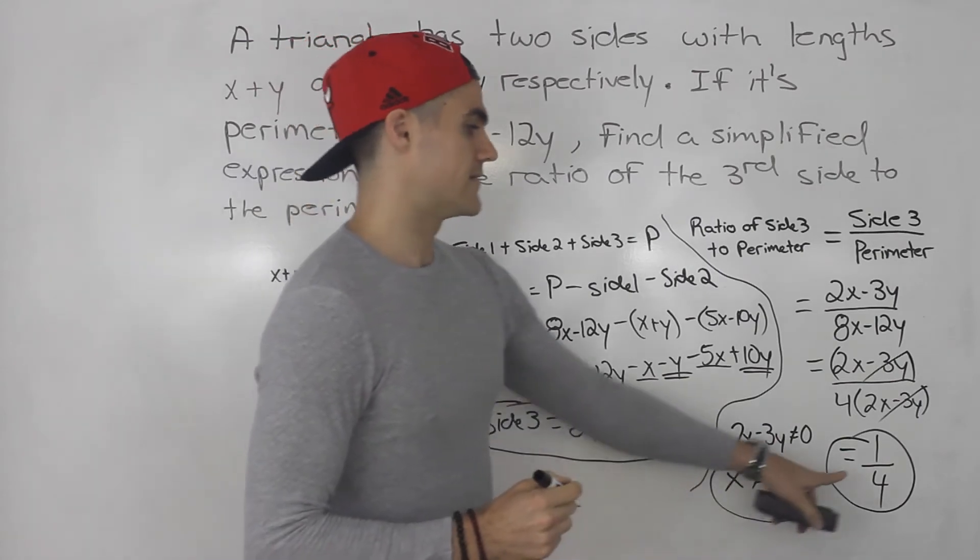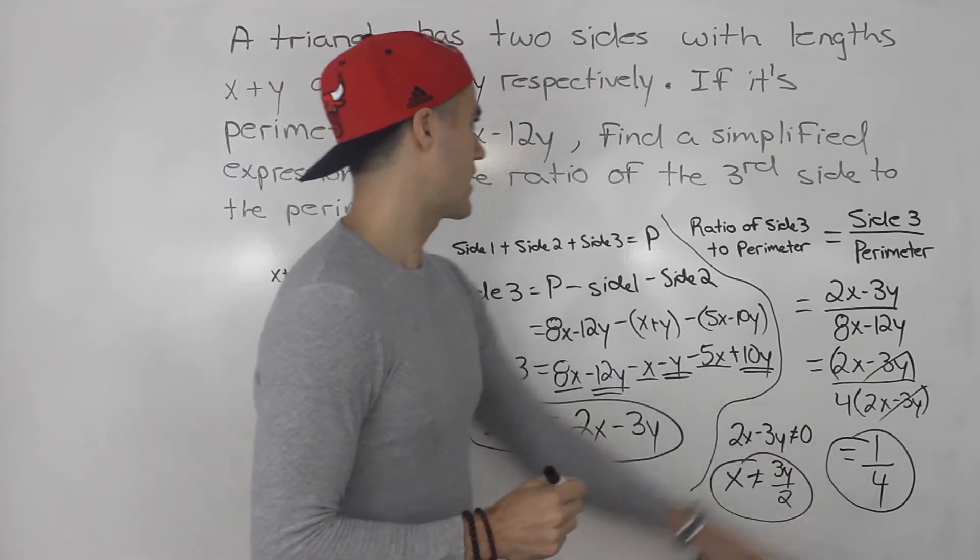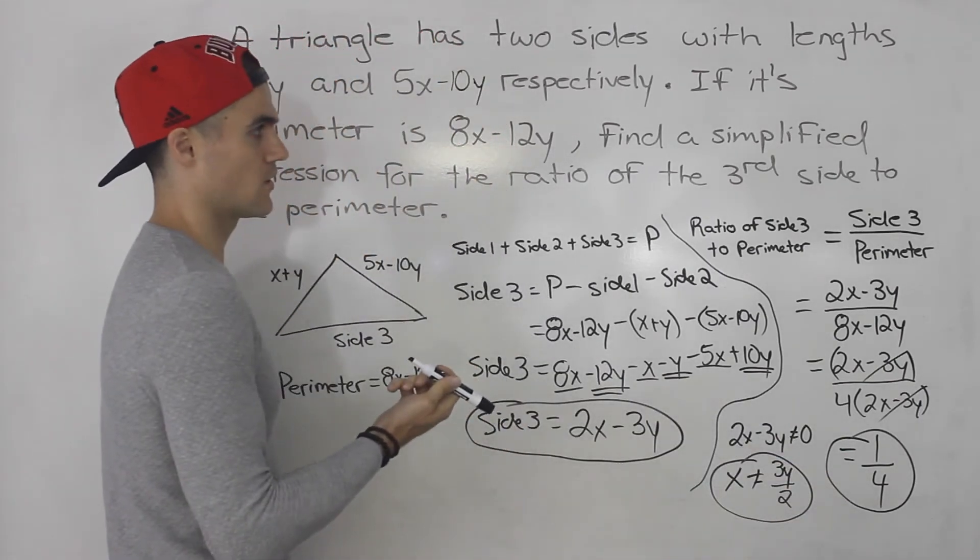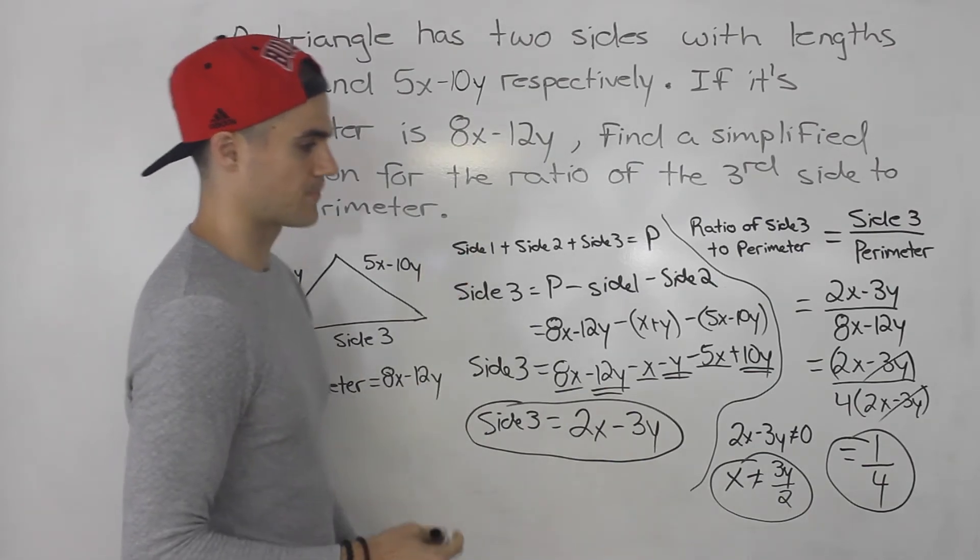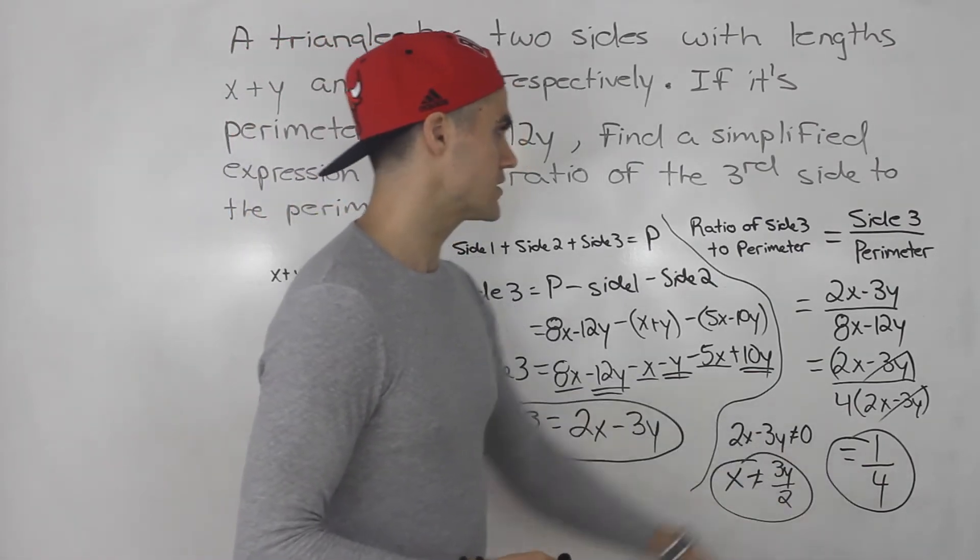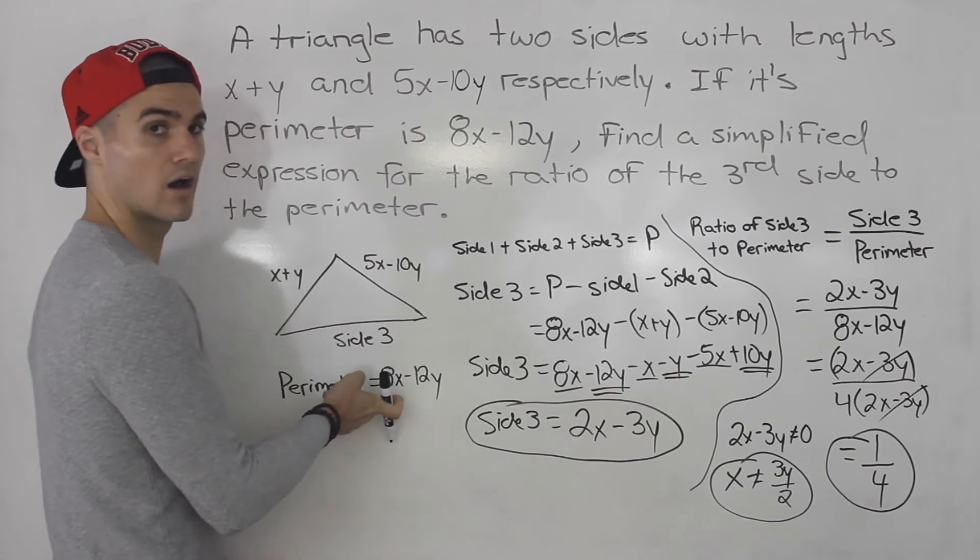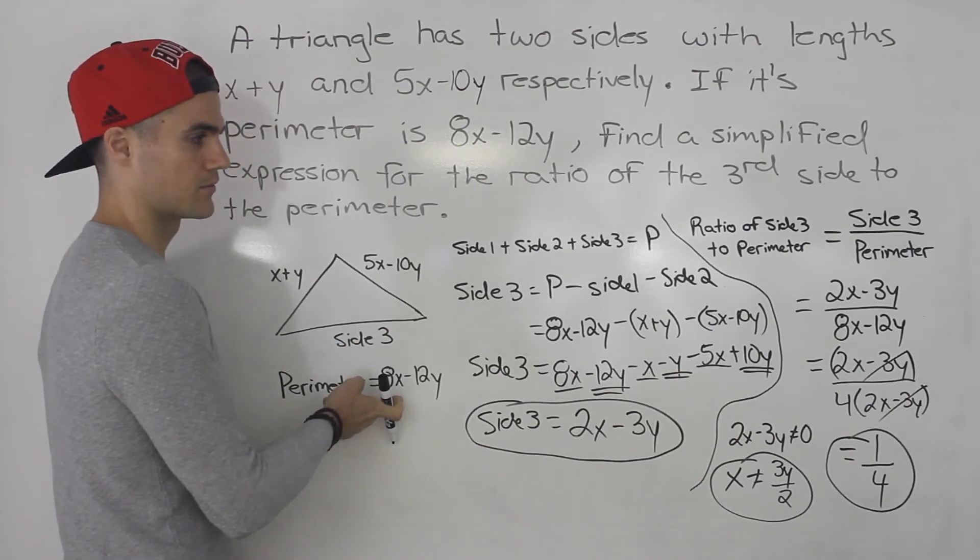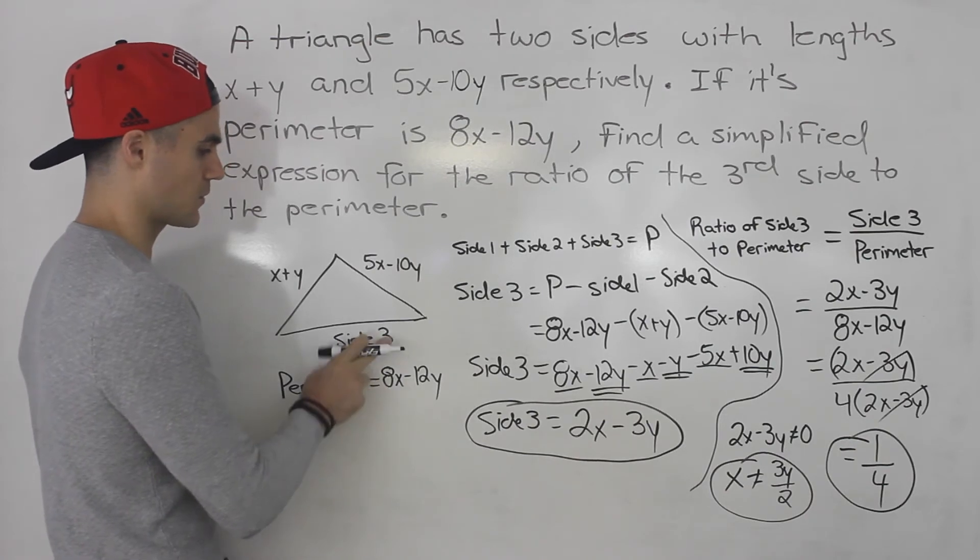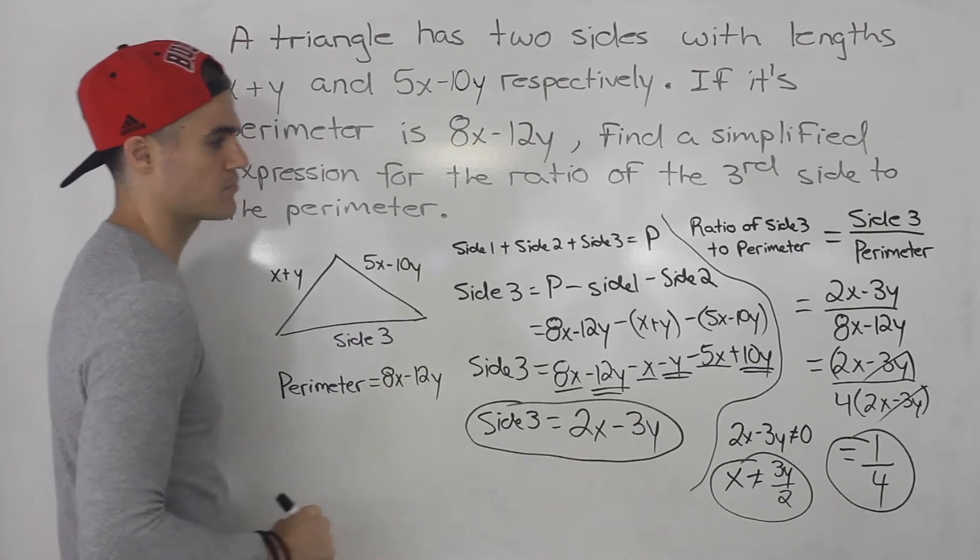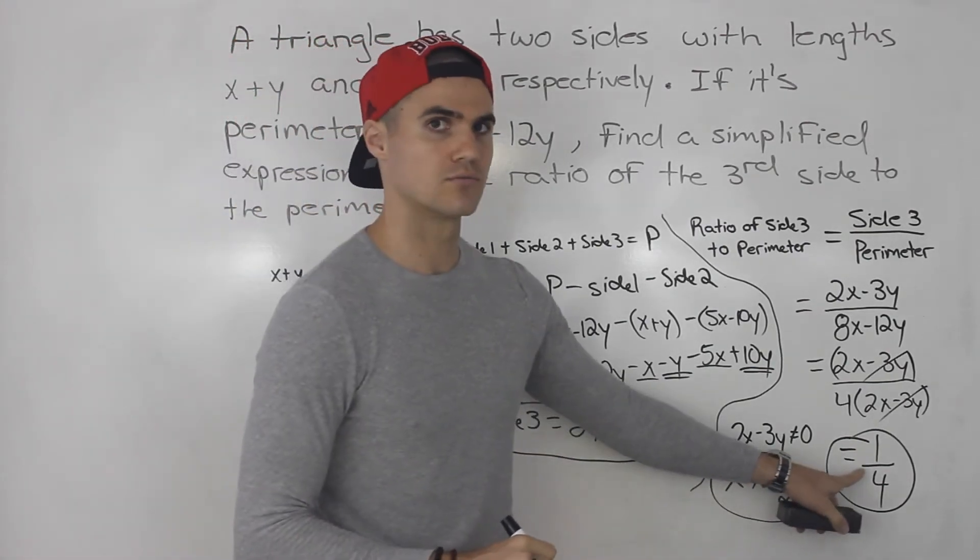So that is the answer. That's the simplified expression for the ratio of the third side to the perimeter. And what does that mean? Well, it actually means that this side is one fourth of the perimeter. Does that make sense? So it's 25% of the perimeter. That's what this ratio means here.